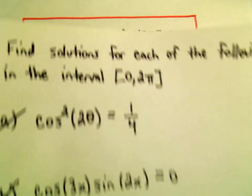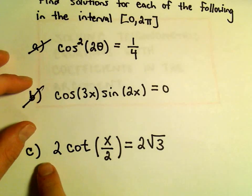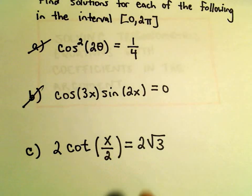So one more example here of solving a trig equation with coefficients in the argument. And here we're going to solve 2 times cotangent of x over 2 equals 2 times root 3.